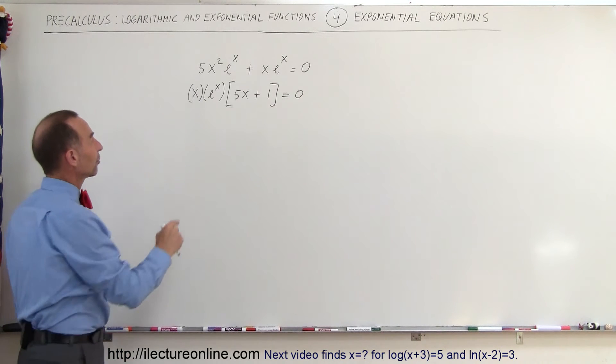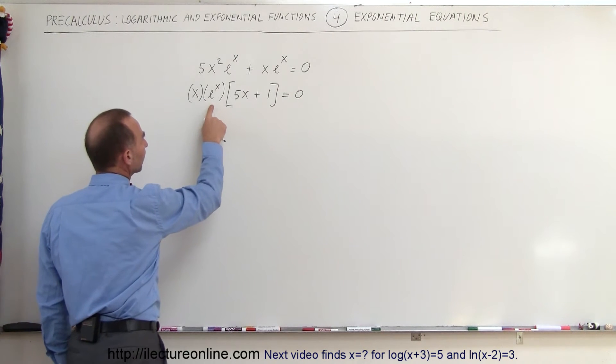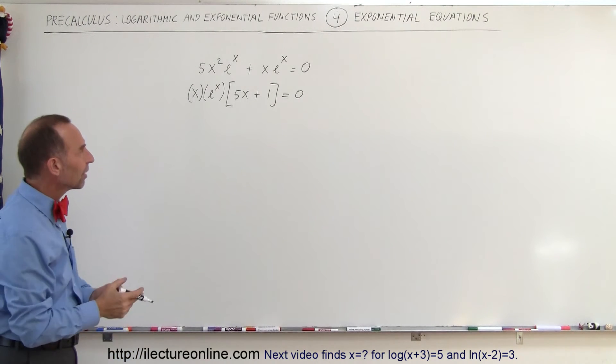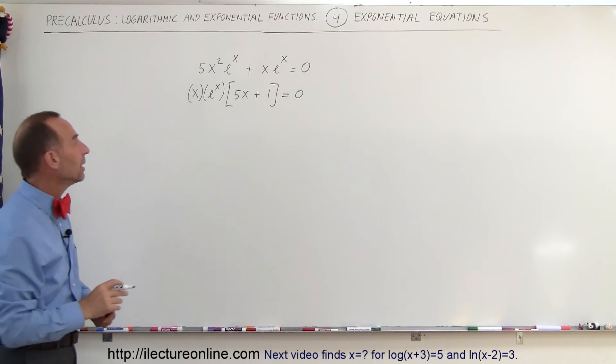So from this we can see that we have three factors. We have x, e to the x, and the quantity 5x plus 1 equals 0, and whenever we multiply things together and we get 0 that means any one of them can equal 0.